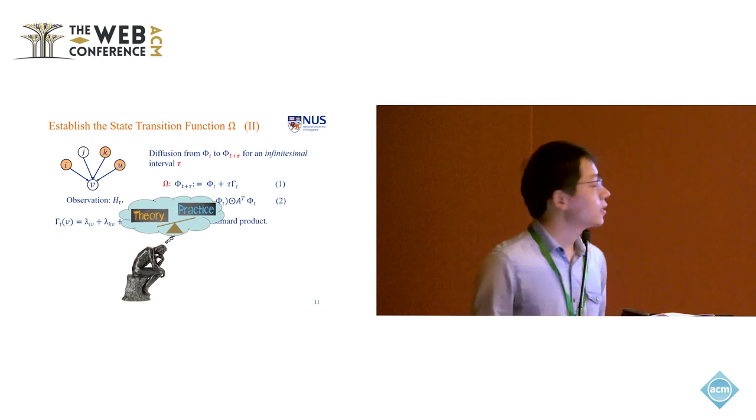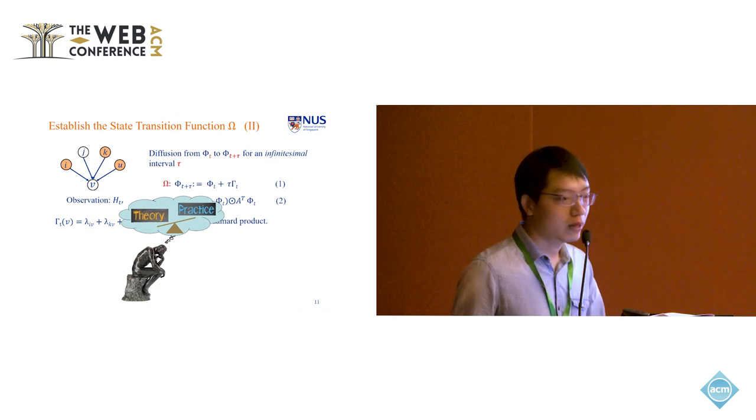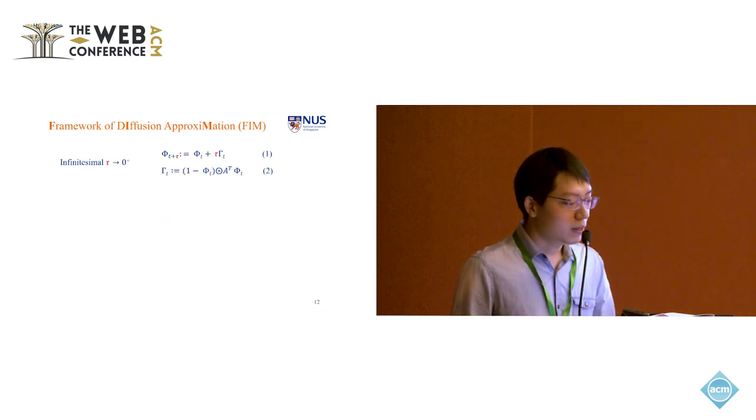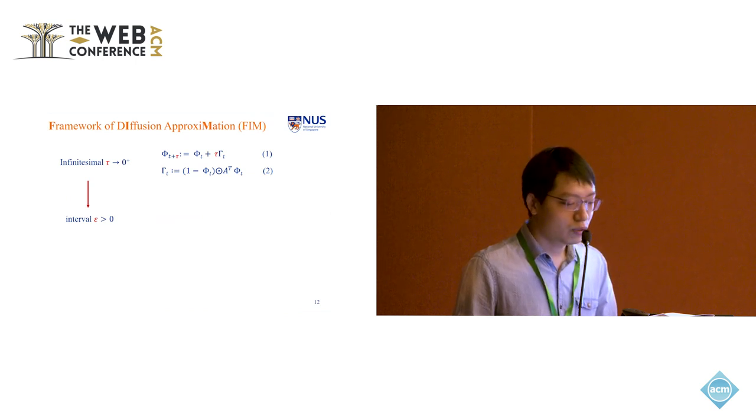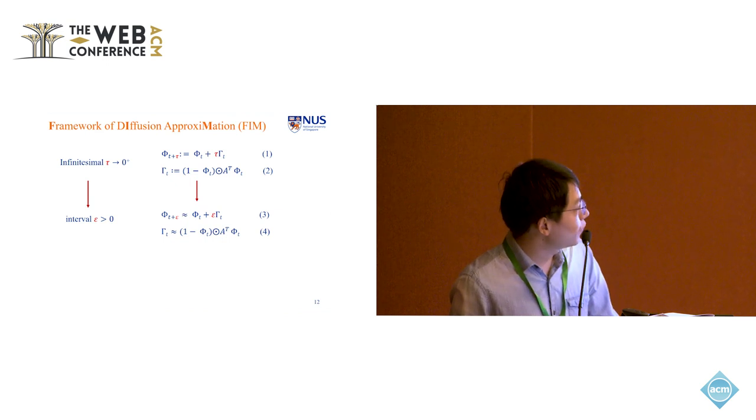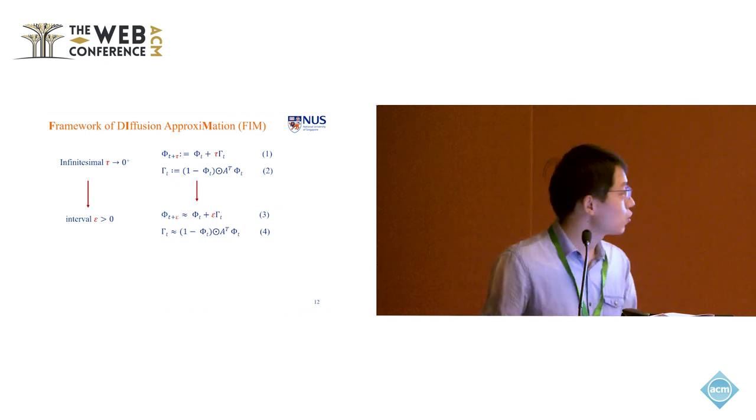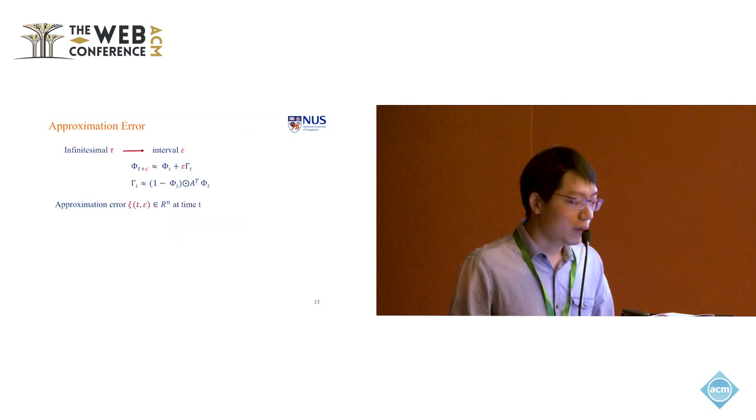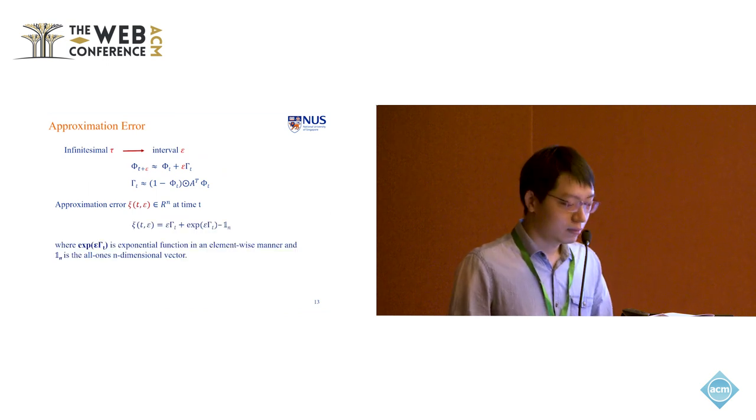But however, this framework is more of a theoretical interest because we cannot trim our model using infinitesimal interval tau. So here we relax the tau here to an interval epsilon. So equation one and equation two would be relaxed to equation three and four. And based on this framework, we propose a framework of diffusion approximation, short for FIM. And the corresponding error here we express as a c t epsilon. And it is a function of both gamma t and epsilon.